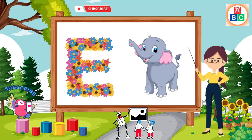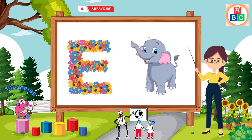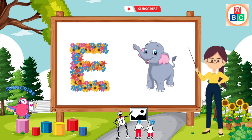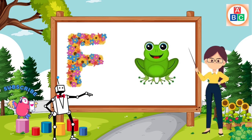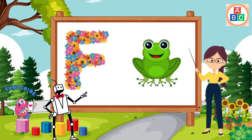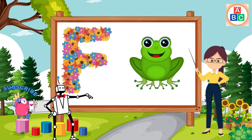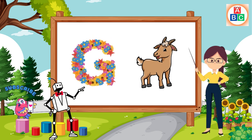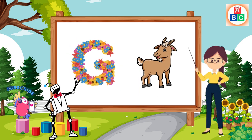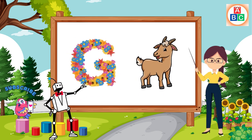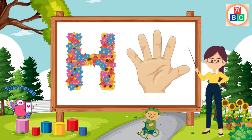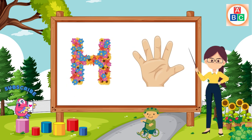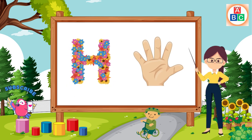E is for elephant, e-e-elephant. F is for frog, f-f-frog. G is for goat, g-g-goat. H is for hand, h-h-hand.